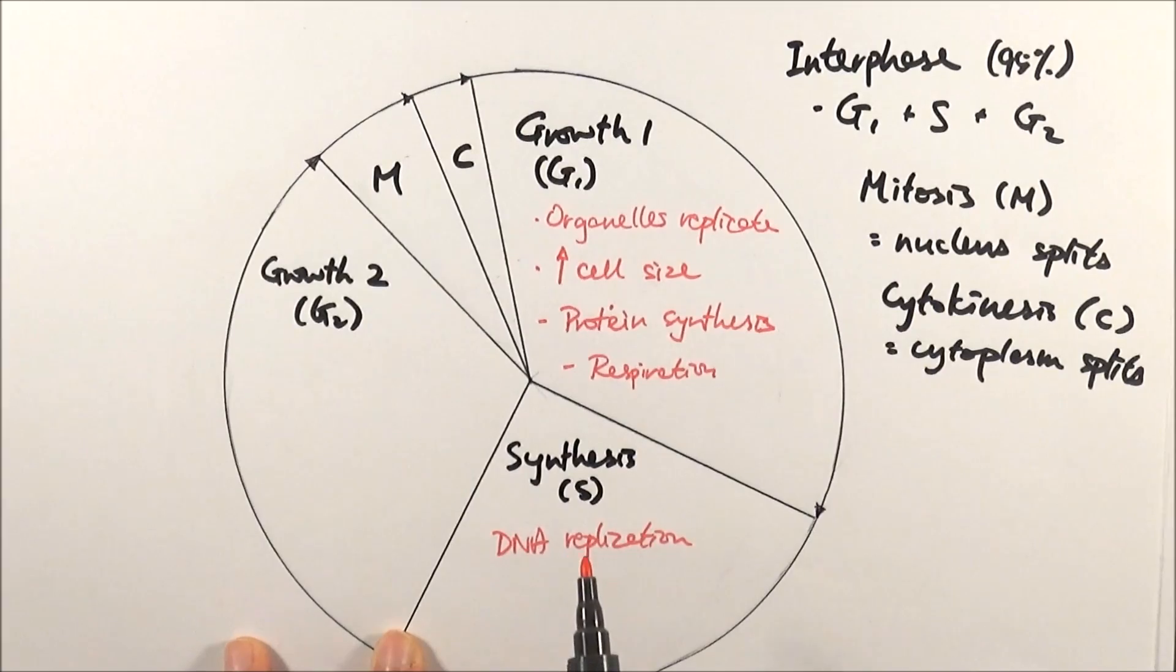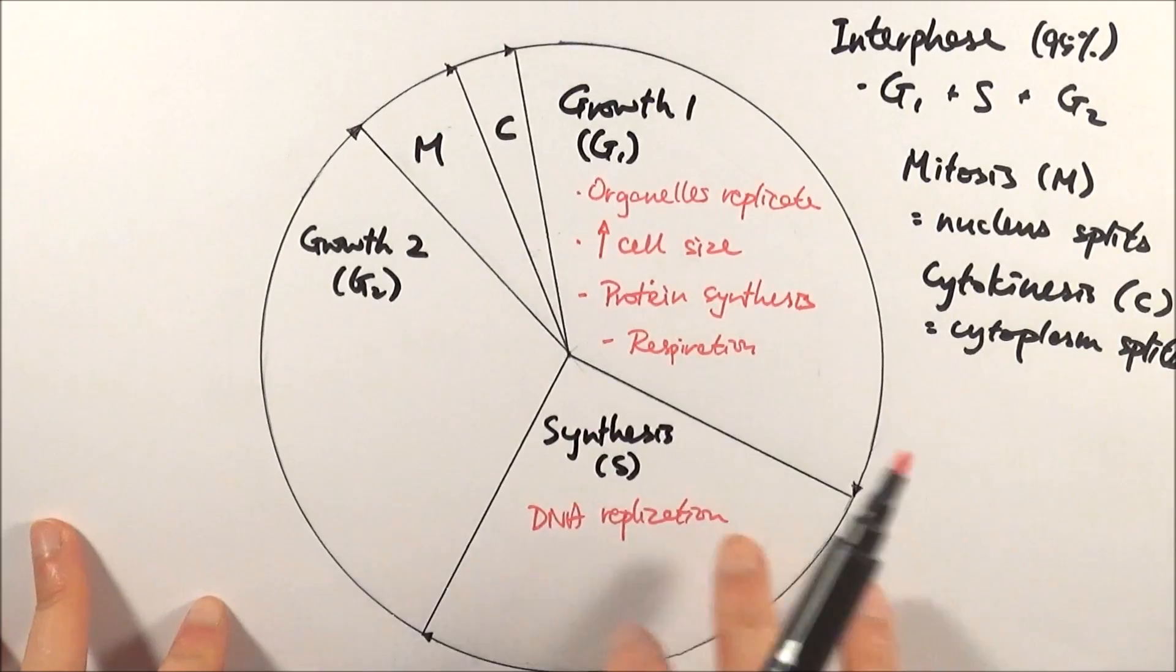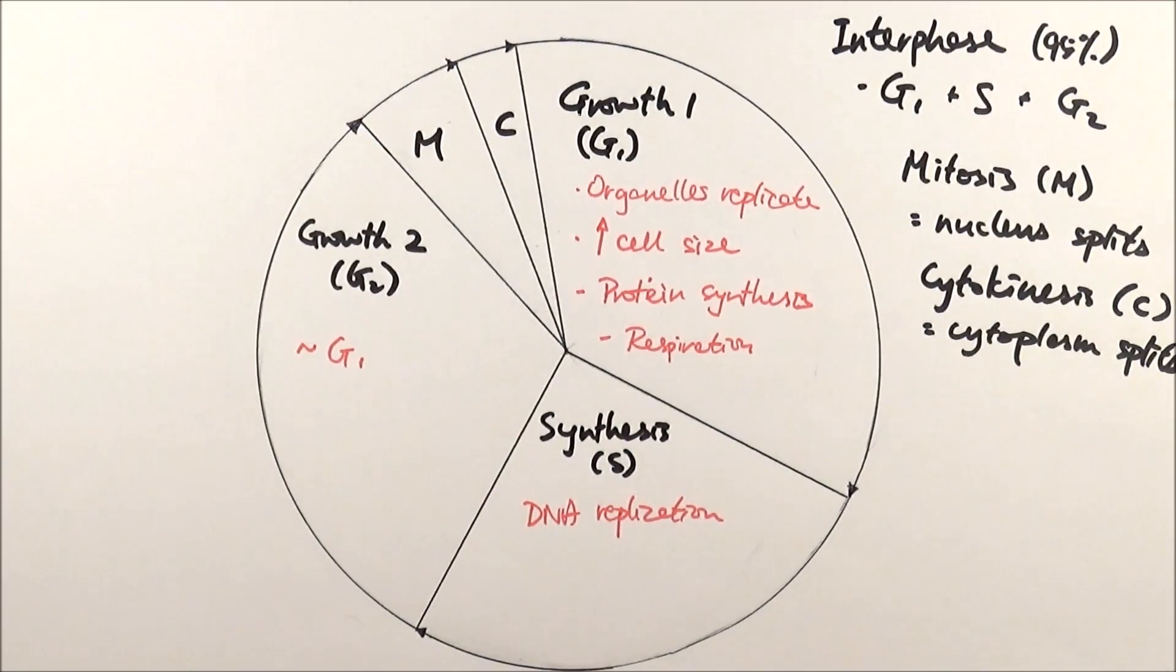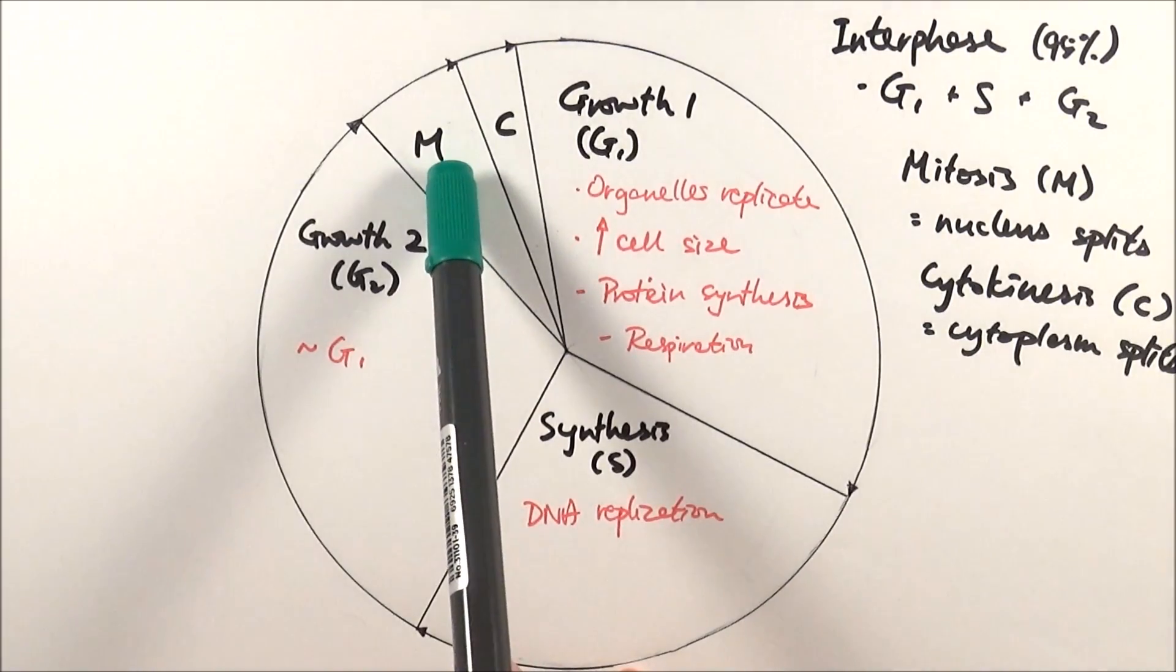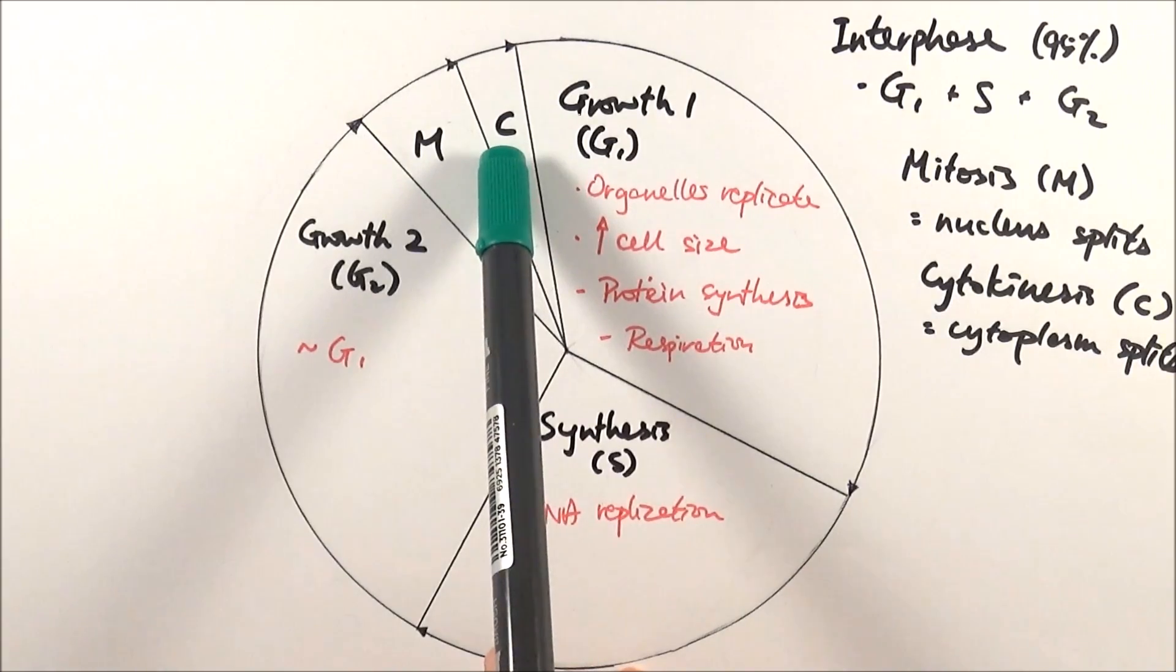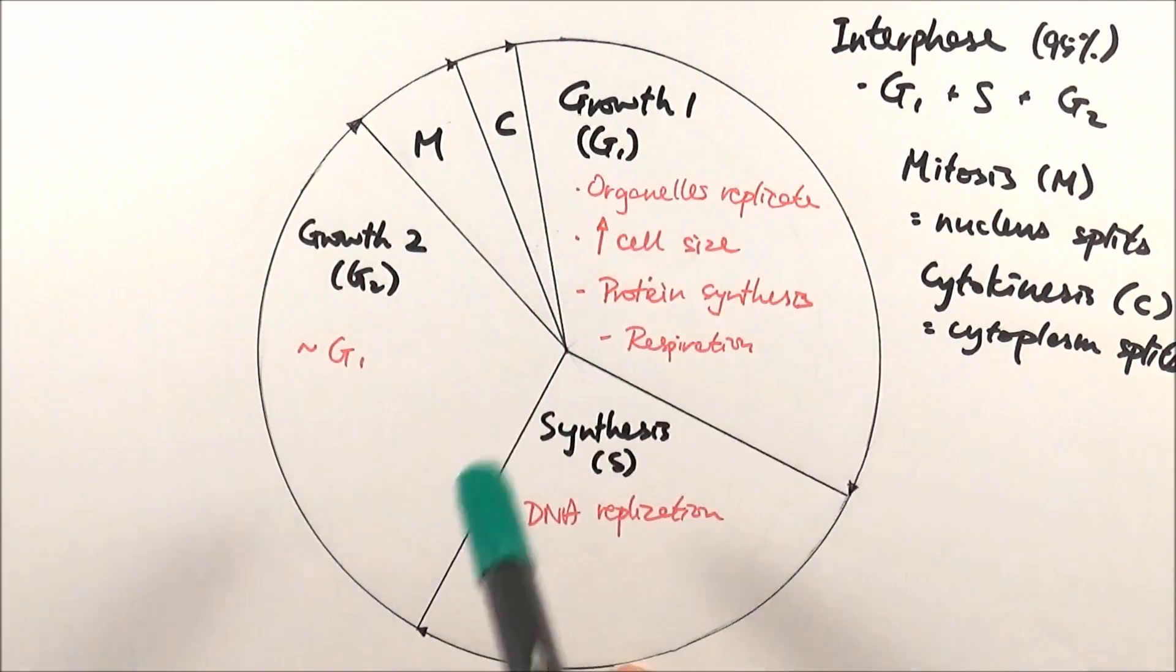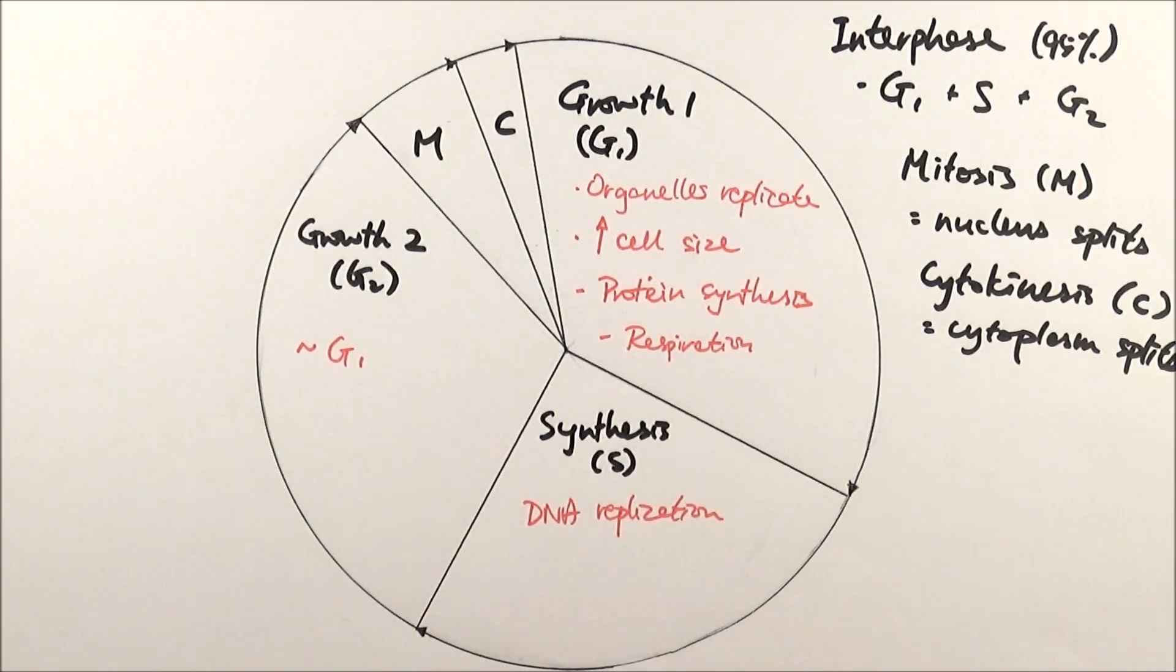Then growth 2 is pretty much the same as growth 1. There's not a lot of differences between the two except when it comes to checking the content—they check for slightly different things. Otherwise it's pretty much the same. So the cell undergoes interphase: G1, S, and G2. Then it gets enough stuff to go into mitosis, splitting the DNA, then cytokinesis, splitting the cytoplasm into two separate daughter cells. Each of those daughter cells will then undergo the same process again and again, and that's why we get so many different cells.